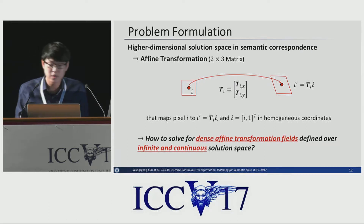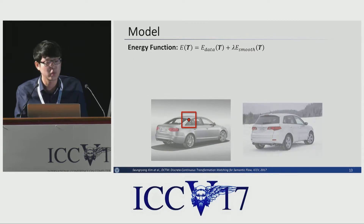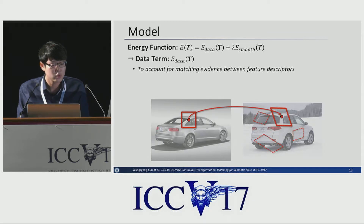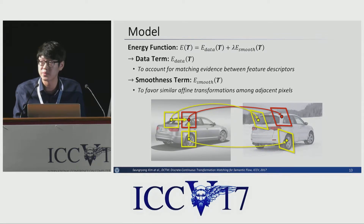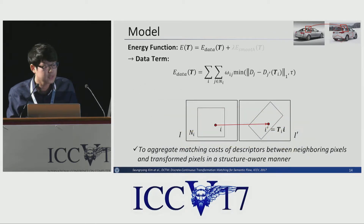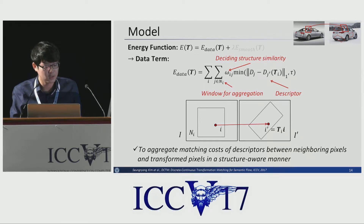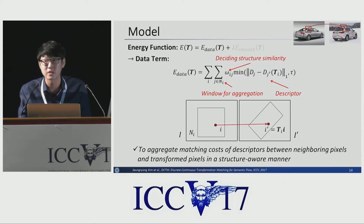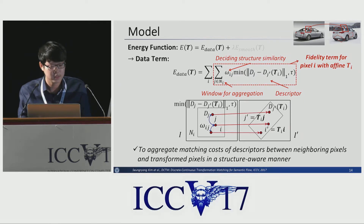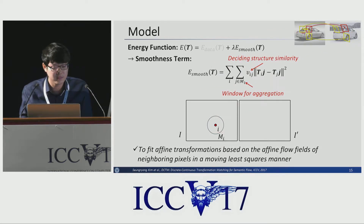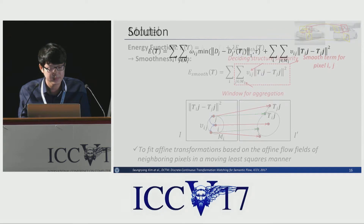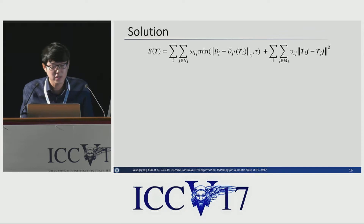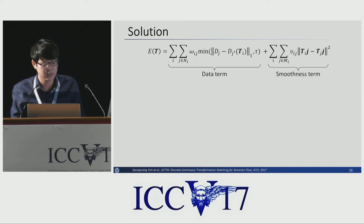The question is how to solve this dense affine transformation field defined over an infinite continuous solution space. To address this problem, we formulate an energy function consisting of a data term to account for matching evidence between pixel descriptors, and a smoothness term to favor similar affine transformation fields among adjacent pixels. Our data term aggregates matching costs in a structure-aware manner, and our smoothness term fits the affine transformation based on the affine flow field of neighboring pixels in a locally consistent manner.